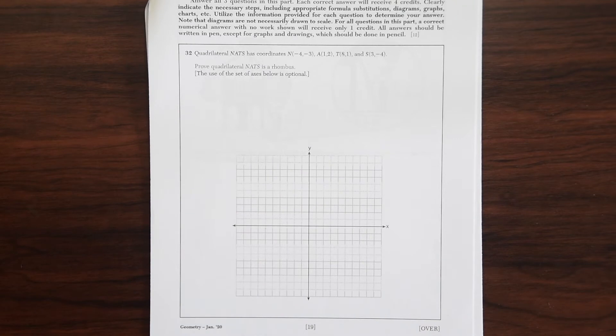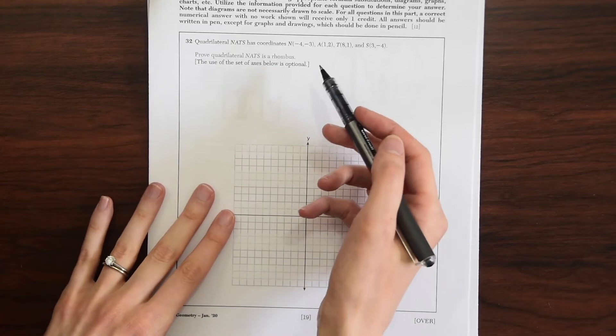So we're going to want to show that all sides are equal to each other. All sides are congruent and have the same distance. So first let's just graph this out with the coordinates they gave us.